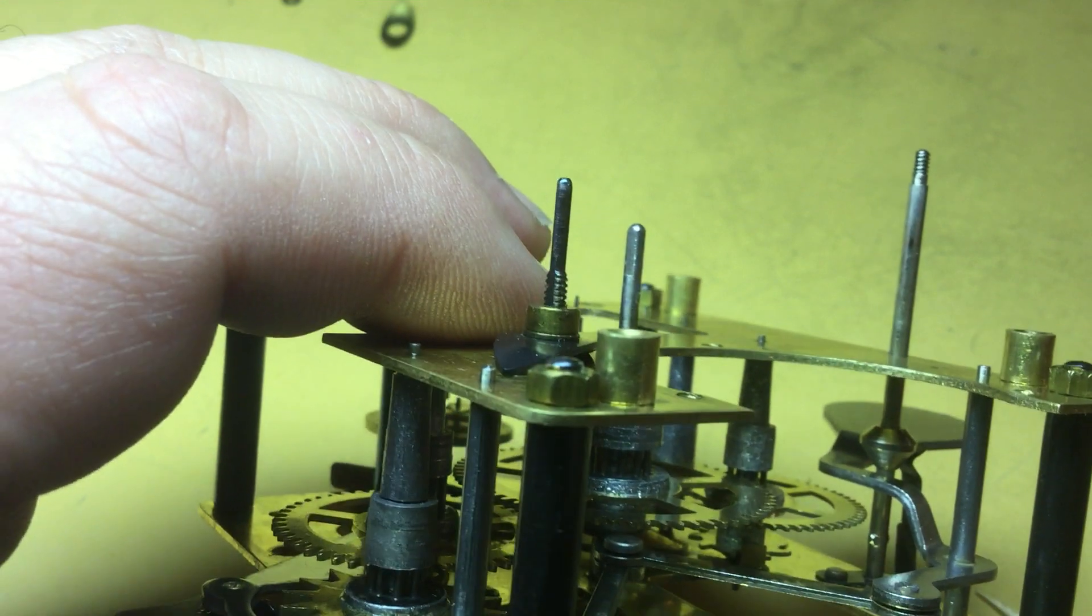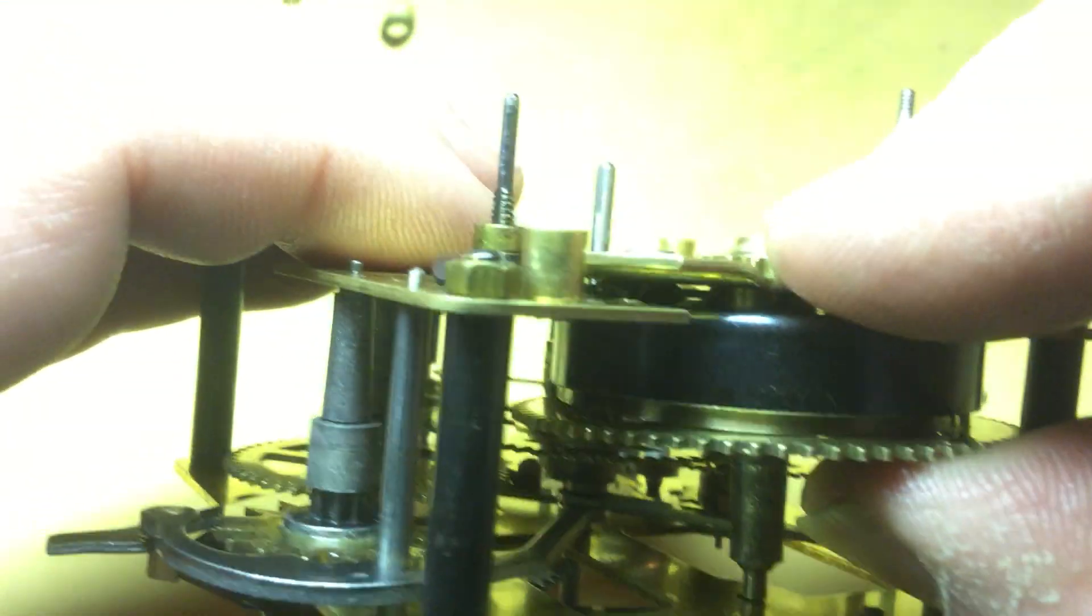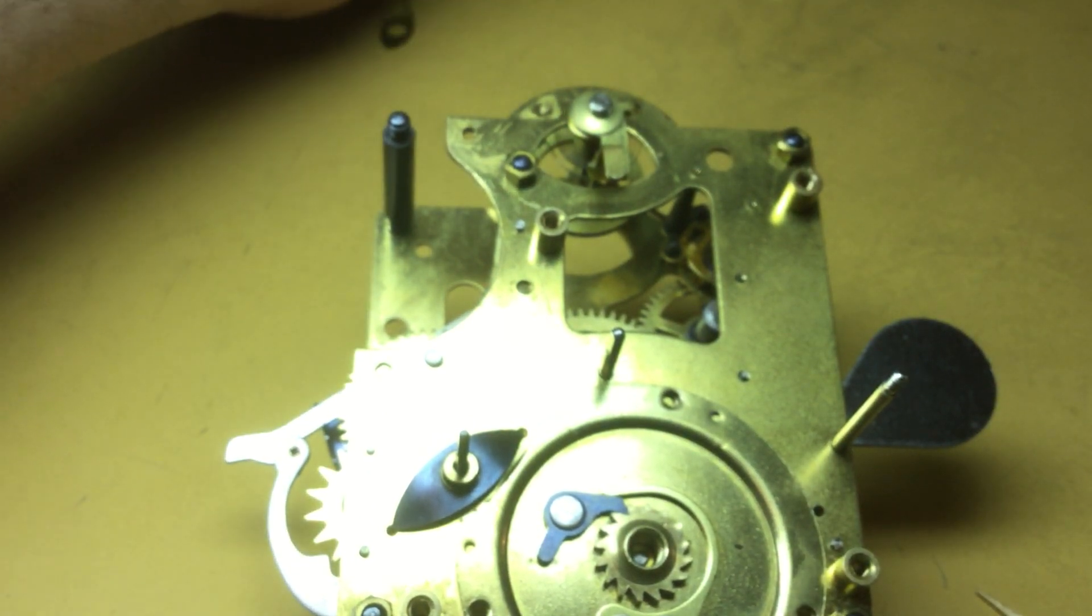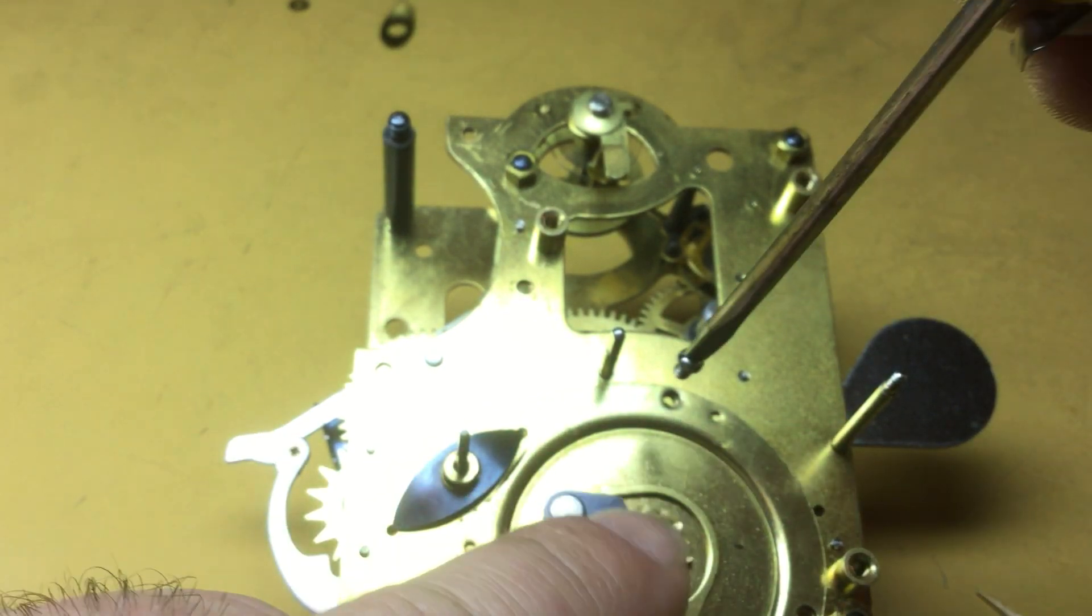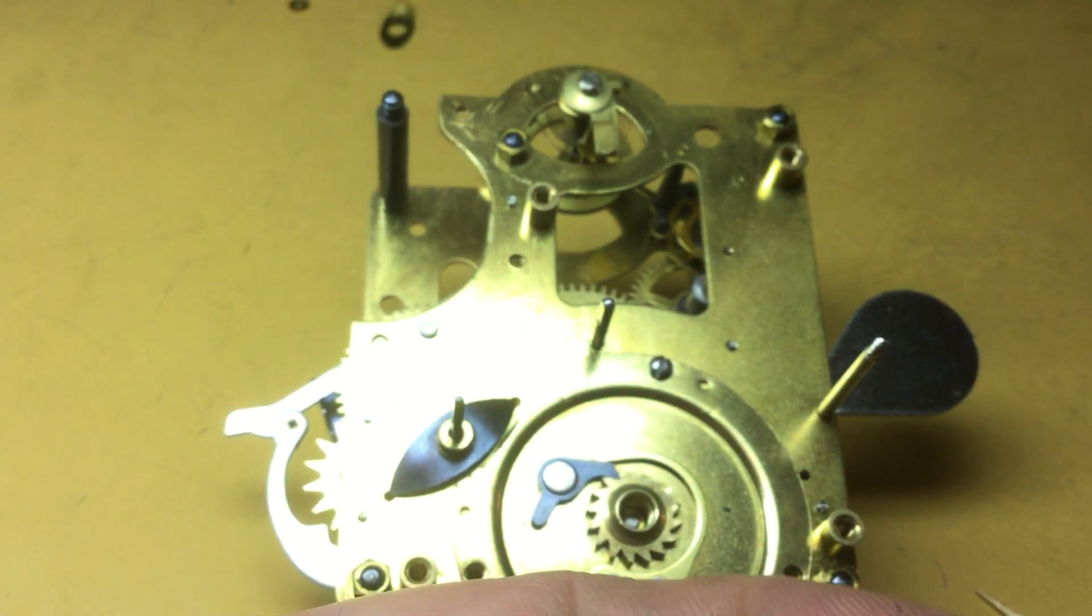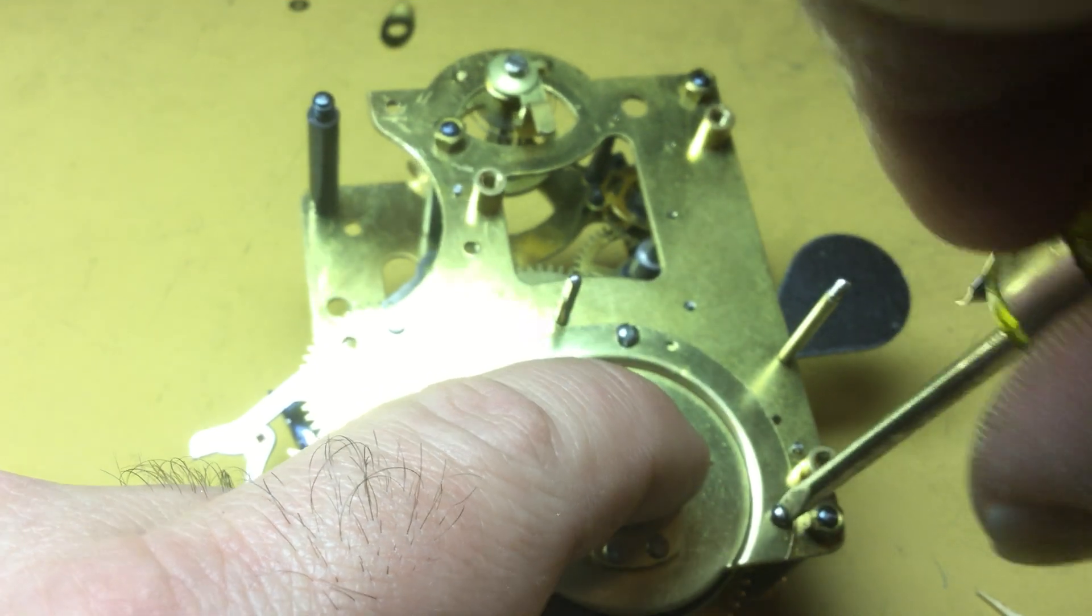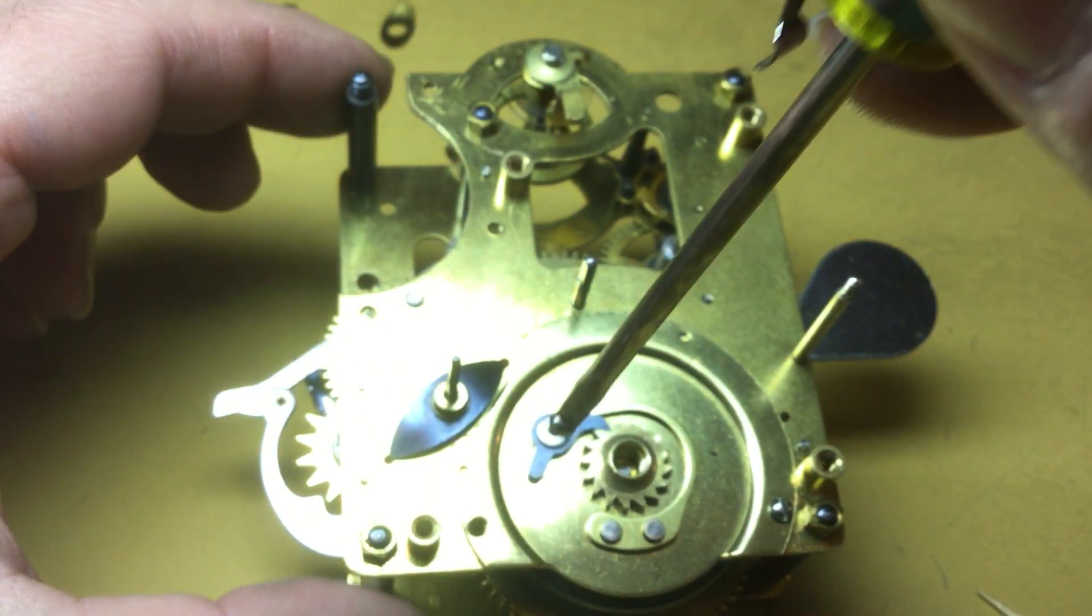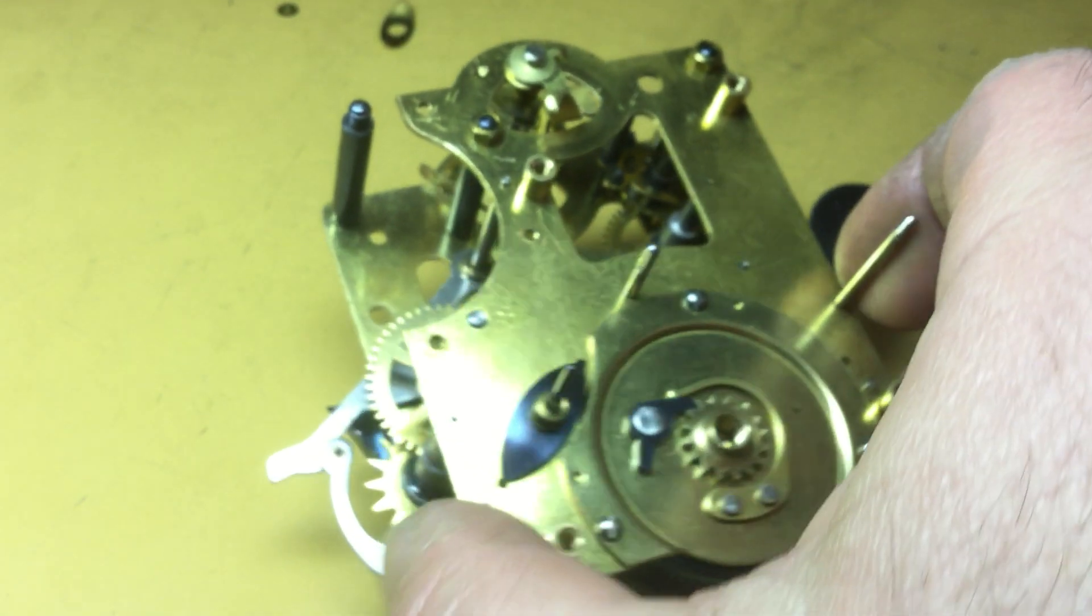Okay. Hold the movement like so. Install the barrel bridge just like that, and let's get some screws in there. Okay, flip the movement over.